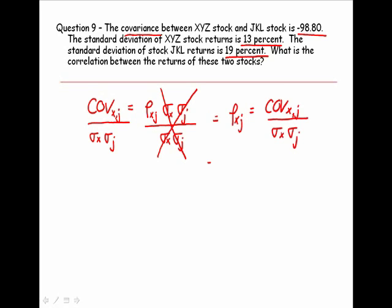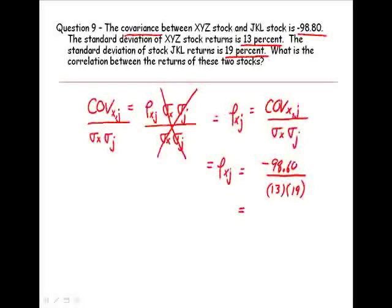Plugging our variables into this model, we're solving for the correlation. The covariance is negative 98.6. The standard deviation coefficients are 13 percent and 19 percent, and we get a correlation coefficient of negative 0.40.